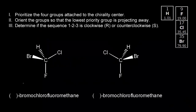The RS system is used to describe the configuration of a chirality center. Here we have a pair of enantiomers — one compound on the left and its mirror image on the right. We're going to assign an R or S to each of our enantiomers.